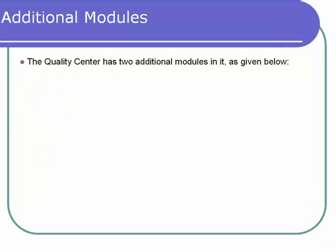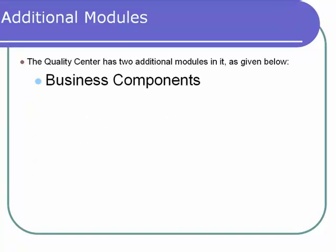Apart from these, based upon the Quality Center license, you may also see two additional modules: Business Component, which is used for business process testing, and Dashboard, which is used for real-time project tracking.